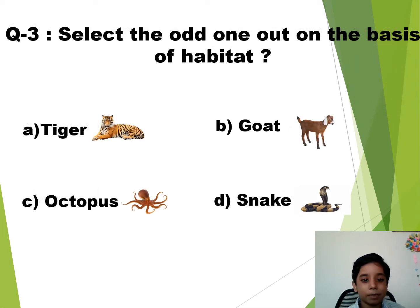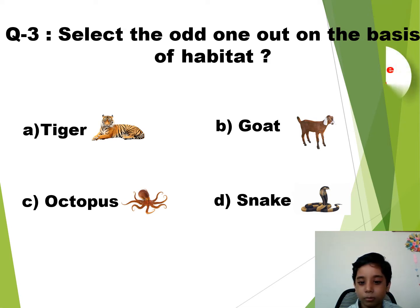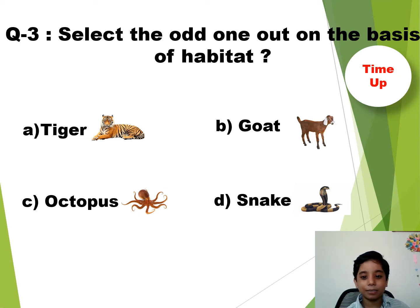Question number 3. Select the odd one out on the basis of habitat. The time starts now. Time up. So the answer is Goat.